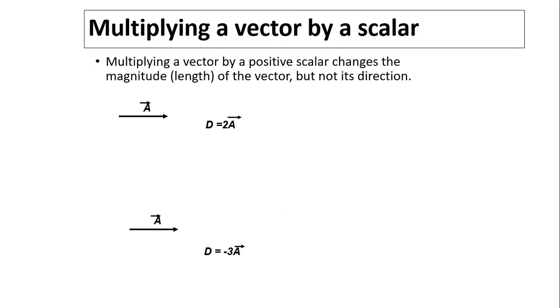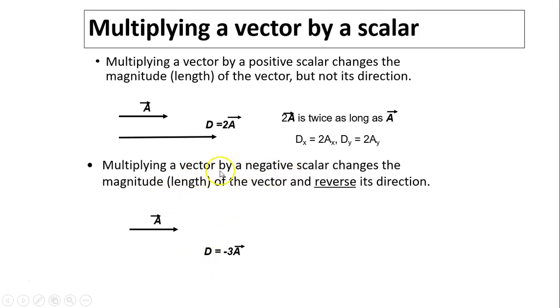Multiplying a vector by a positive scalar changes the magnitude of the vector but not its direction. So D equals 2A means you elongate A by two times and direction is still the same. 2A is twice as long as A and in the same direction. So Dx is 2Ax, Dy equals 2Ay. You just multiply the components by two.